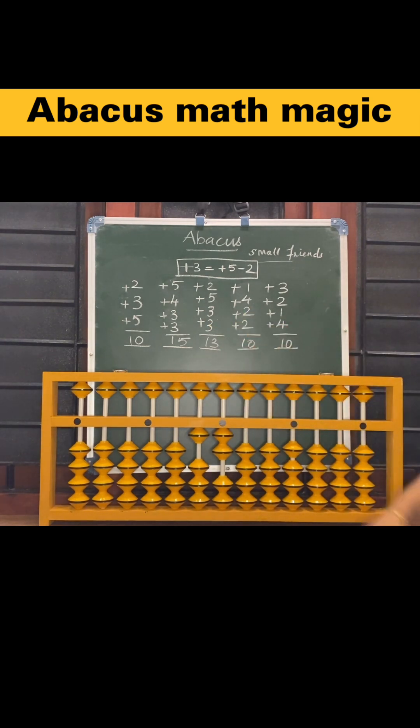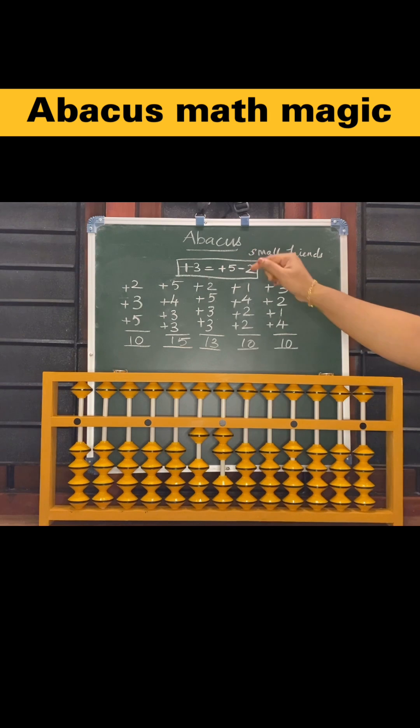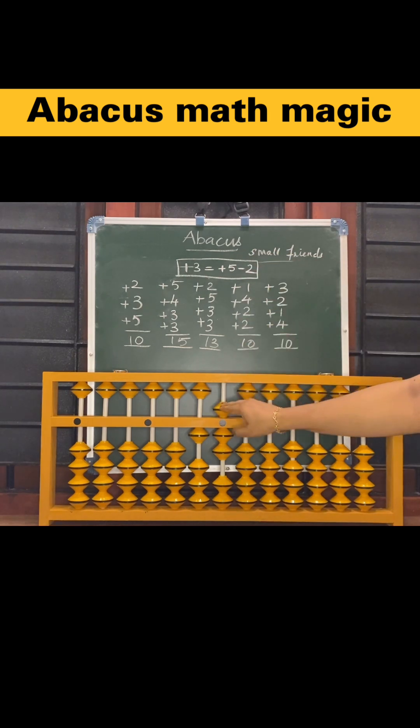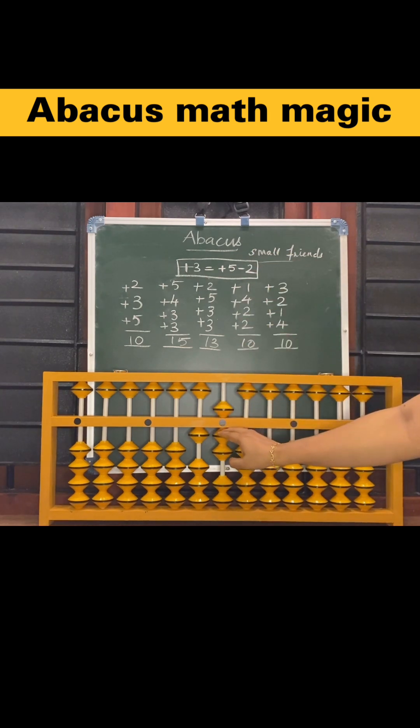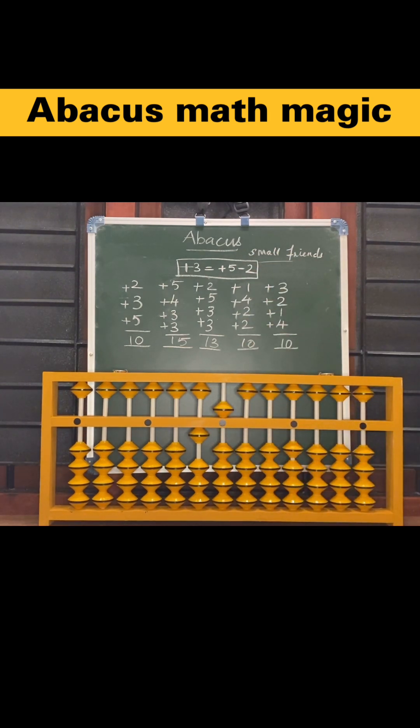Now again 3 — how to add 3? Apply this formula: add 5, less 2. What is the answer now? 15.